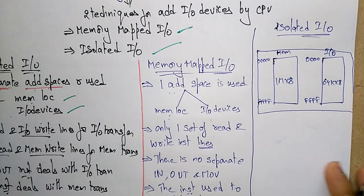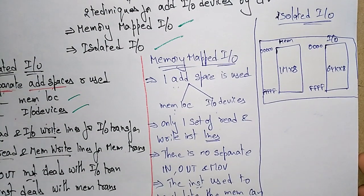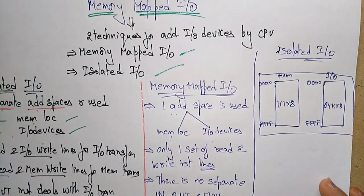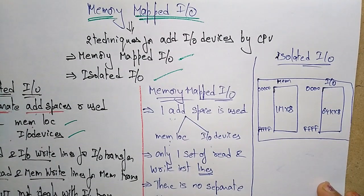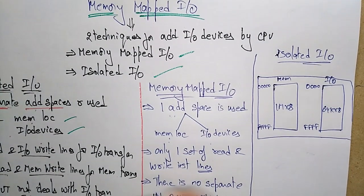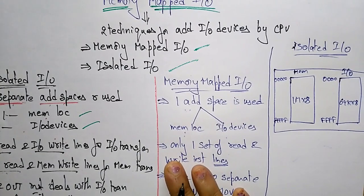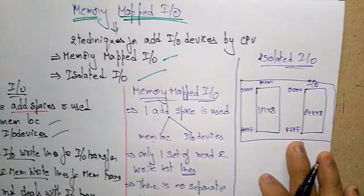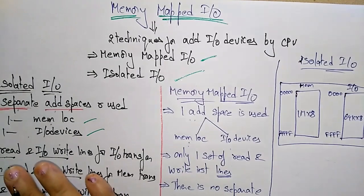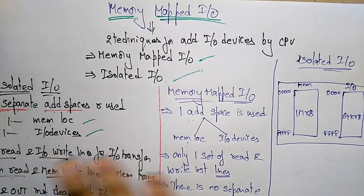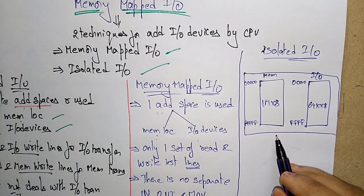Welcome back, students. We continue the topic of memory mapped I/O. We had seen the difference between isolated I/O as well as memory mapped I/O. Now let's look at the diagrammatic representation of isolated I/O and memory mapped I/O.